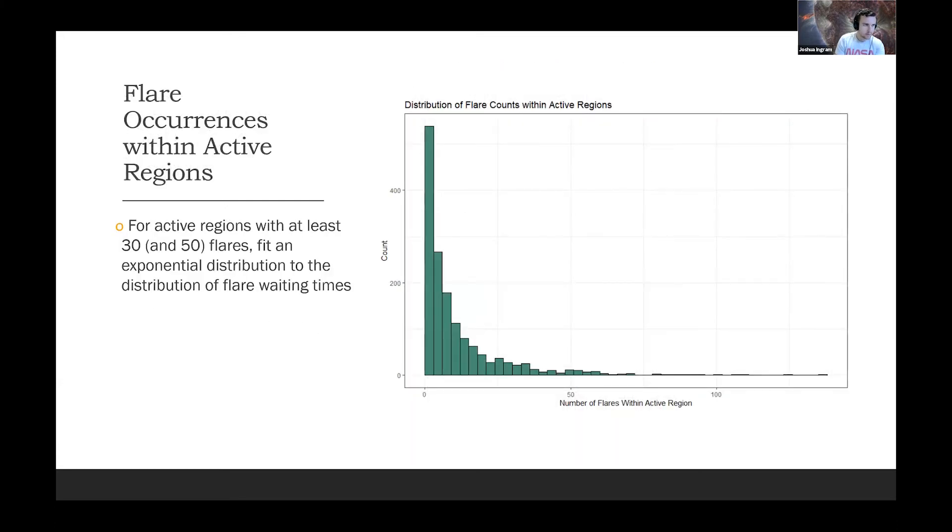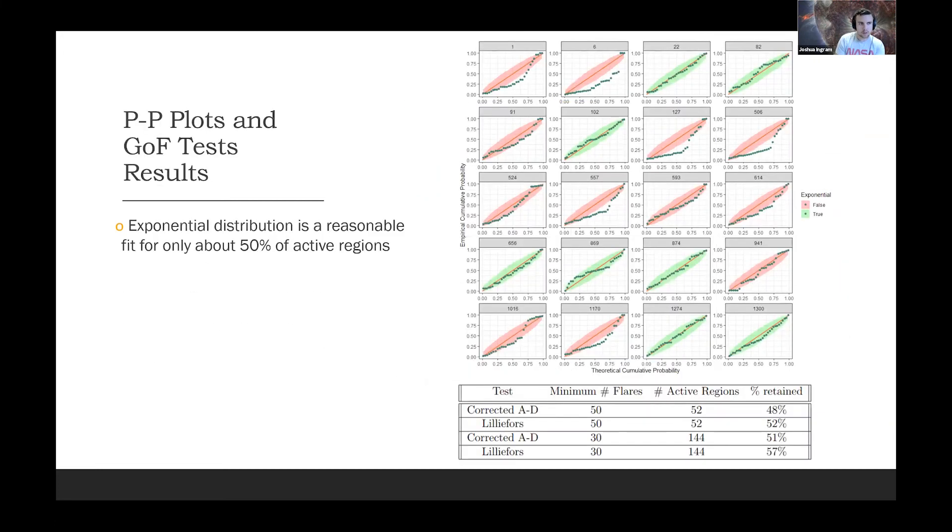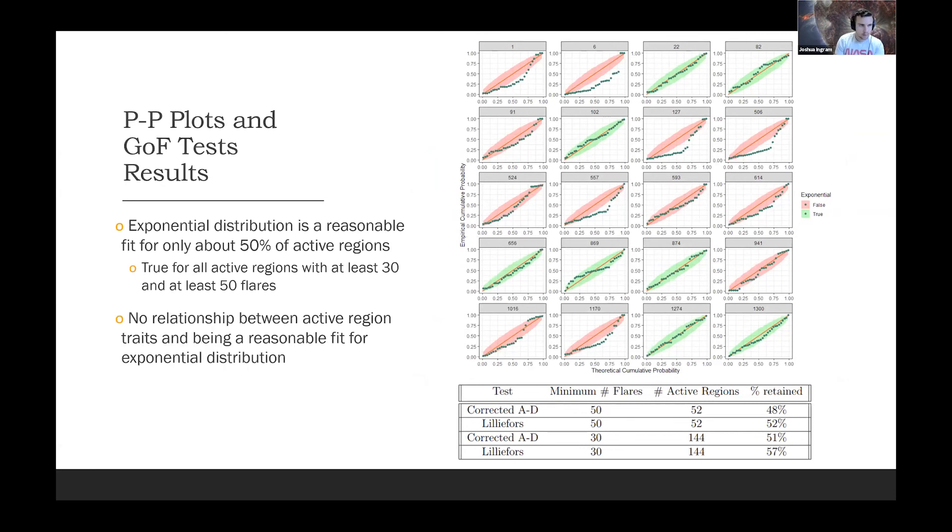Looking at flare occurrences within active regions, clearly there's this issue of flares going off being affected by the solar cycle. What if we just look at flares coming within the same active regions? They supposedly occur at the same rate within the same active region. We look at the waiting times, which is the difference between the start time of one flare and the start time of another flare. We fit an exponential distribution to the waiting time distributions. We find that for 50% of active regions, the exponential distribution was a poor fit according to the corrected Anderson-Darling test for active regions with at least 30 flares, and also roughly 50% for active regions with at least 50 flares. This is odd. If it follows a Poisson process, we'd expect it to be close to 100% of active regions that this would be the case, but we have a mixed relationship.